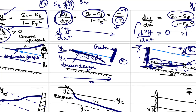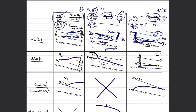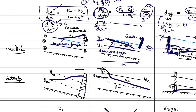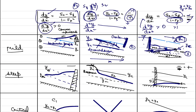This completes our discussion about mild slope profiles M1, M2, and M3. For the next video, I request you to derive all three cases for a steep slope using the same governing equation and logic that we used here. Thank you.